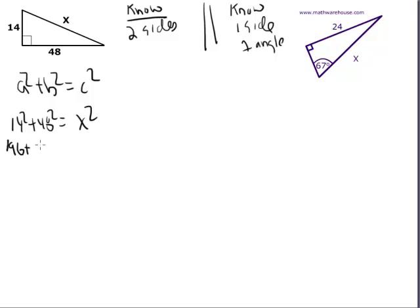14 squared is 196, and 48 squared is 2304 = x². And they add up to 2500.